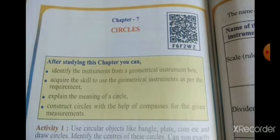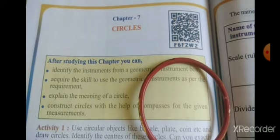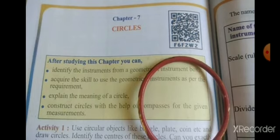I will give some examples of circles: bangles, plates, coins. See, this is the bangle. This is in which shape? Circle shape now.